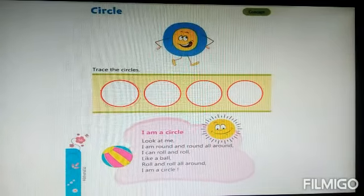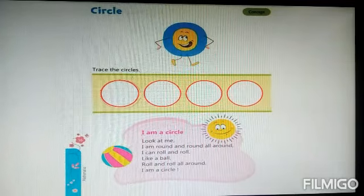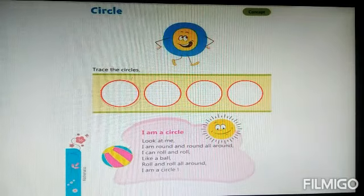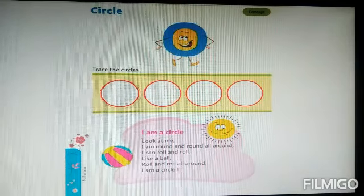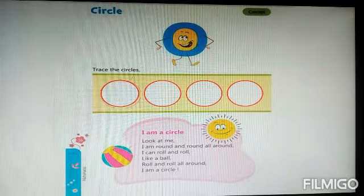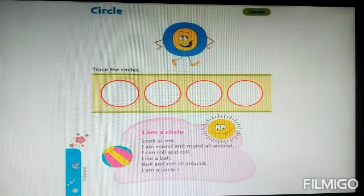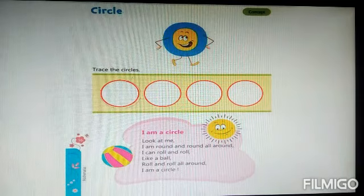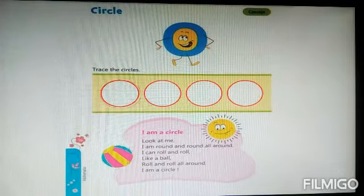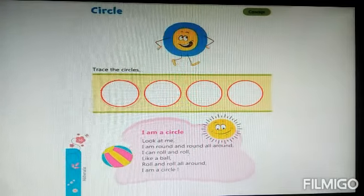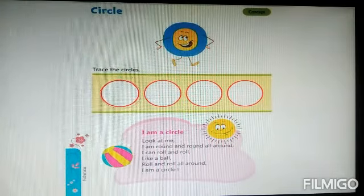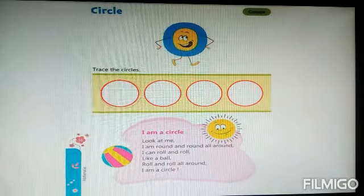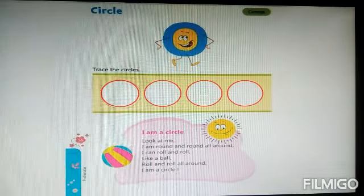Now, let us sing a rhyme about circle. See, here is a ball and here is a sun. Let us start. I am a circle, look at me. I am round and round, all around. I can roll and roll like a ball. Roll and roll all around. I am a circle.